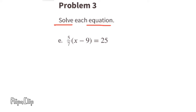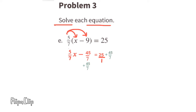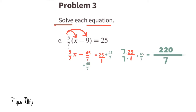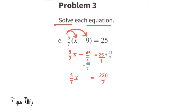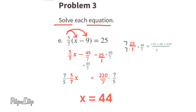Part e: five-sevenths times (x minus 9) equals 25. Distributing gives five-sevenths x minus 45 sevenths equals 25. Add 45 sevenths to both sides. On the right side, convert 25 to 175 over 7 using a common denominator of 7. 175 plus 45 is 220, so the right side becomes 220 over 7. The equation is now five-sevenths x equals 220 over 7. Multiply both sides by 7 over 5 to get x equals 44.